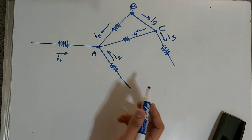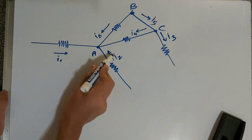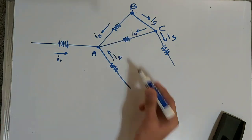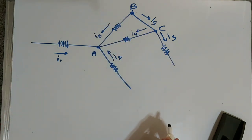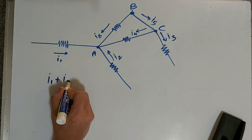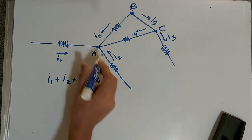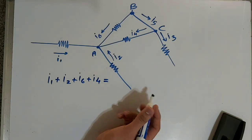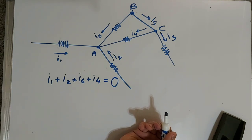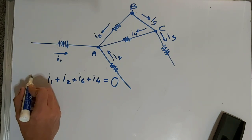Looking at the diagram: I1 is entering junction A, I2 is also entering junction A, I4 is also entering junction A, and I6 as well — so all are entering junction A. The currents entering junction A, that is I1 plus I2 plus I6 plus I4, equals the current exiting junction A, which in this case is zero. This is the equation for junction A.